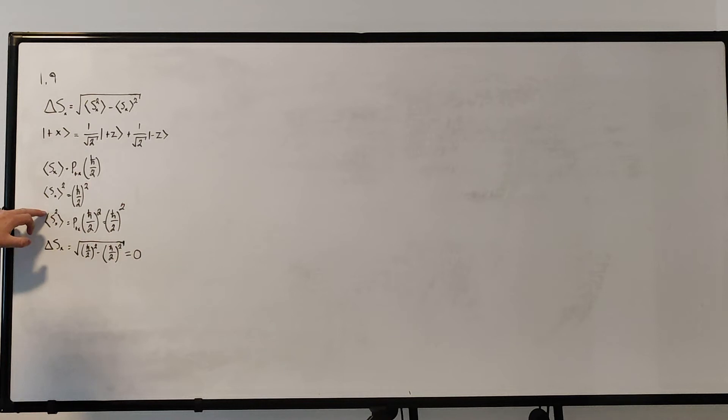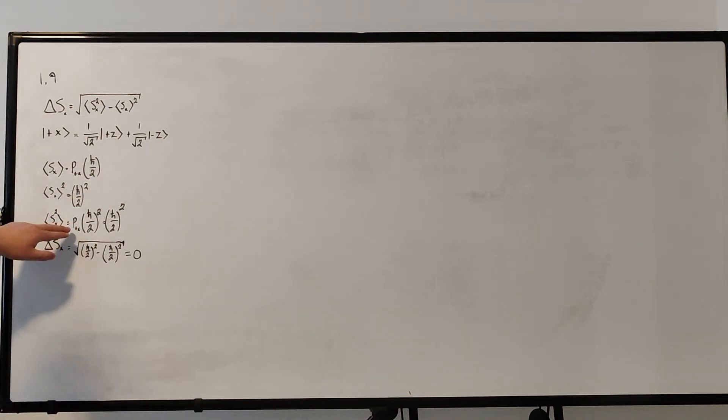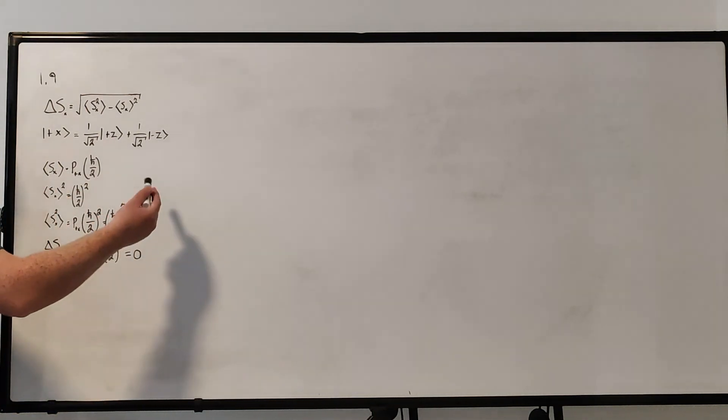And then to find the expectation value of the x component of spin squared, we just square the value, the outcome value. So we multiply by the probability, which is 1 again, times h bar over 2 squared. So again, we get h bar over 2 squared.